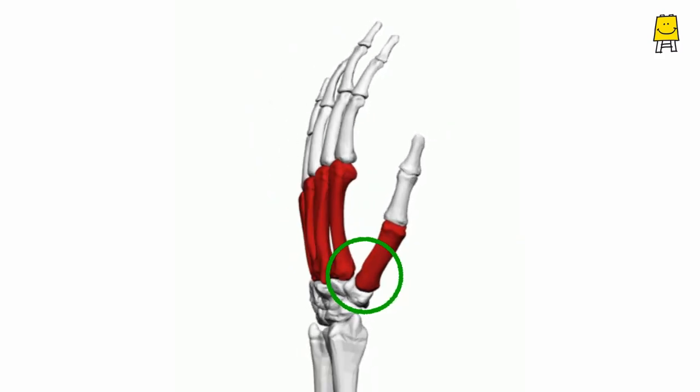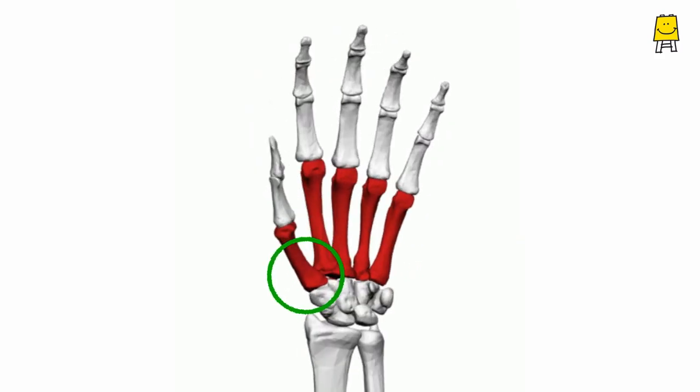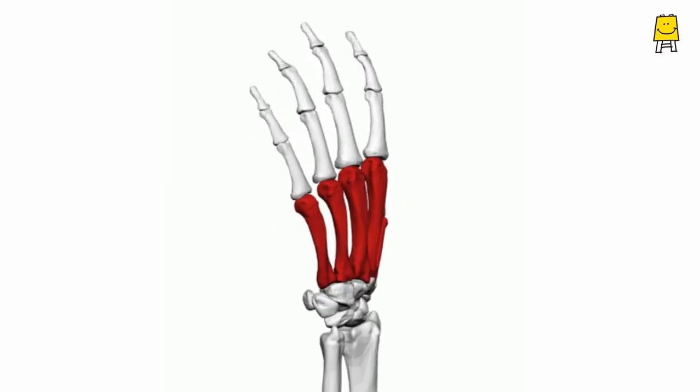The joint between the thumb and the wrist is different from those of other fingers. It's the saddle joint.